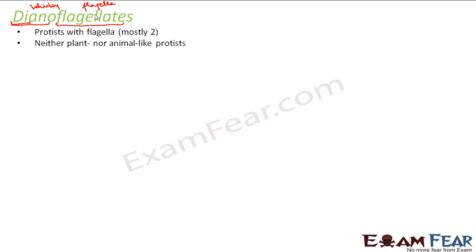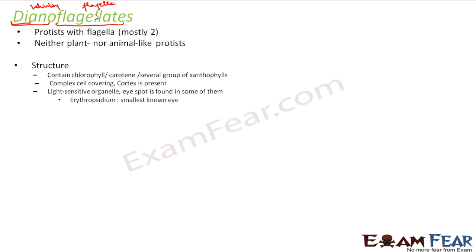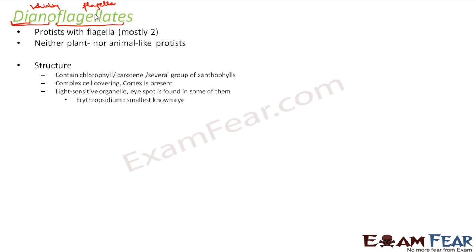They are neither plant-like nor animal-like protists; they do not resemble either plants or animals. Talking about their structure, they contain chlorophyll, carotene, and several groups of xanthophylls, and that is why they are colored. They can be a variety of colors depending upon the pigment present — carotene gives a red color, xanthophylls give yellow, and chlorophyll gives green. So they can be yellow, green, red, blue, or brown.